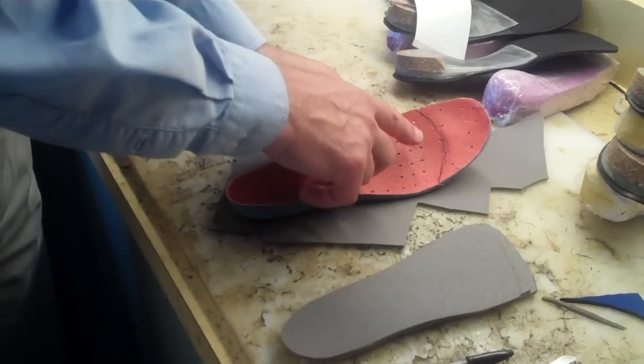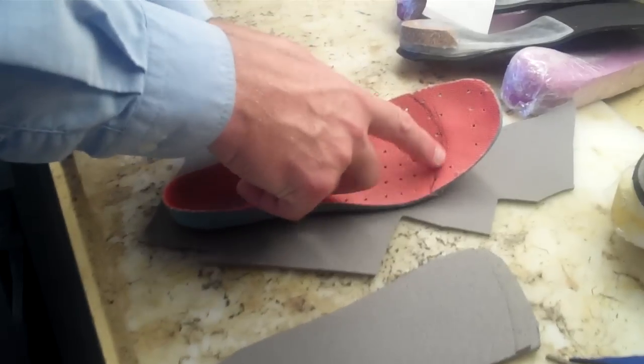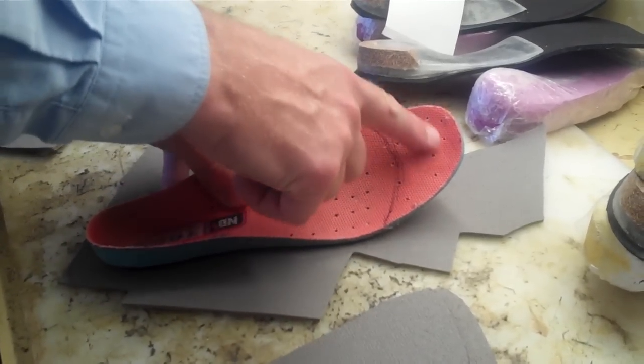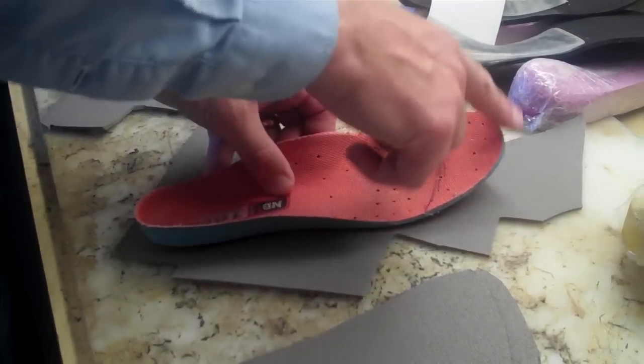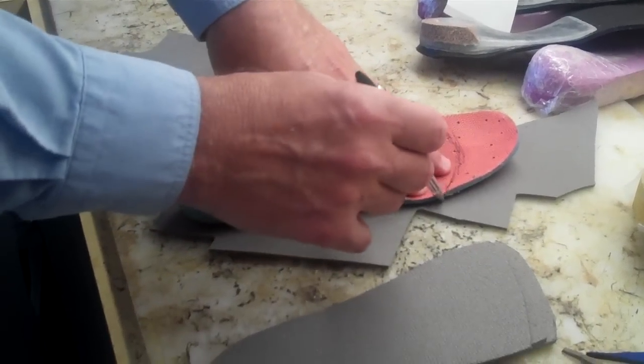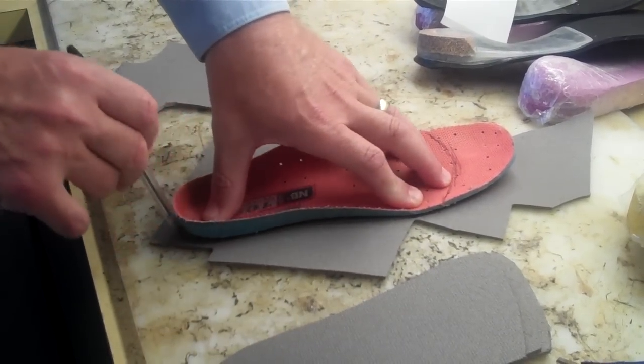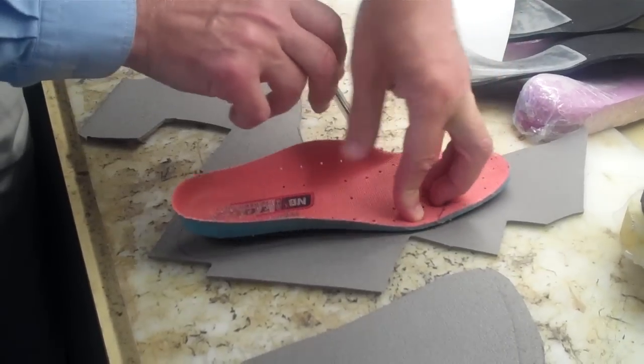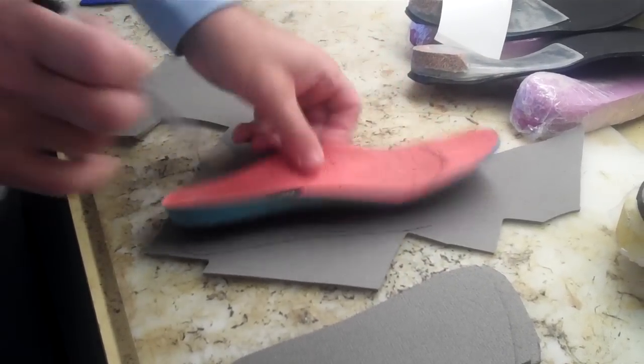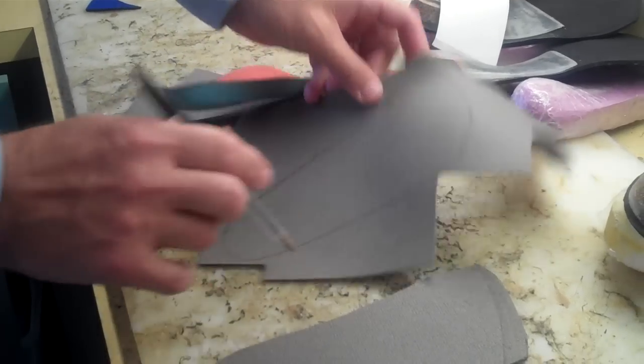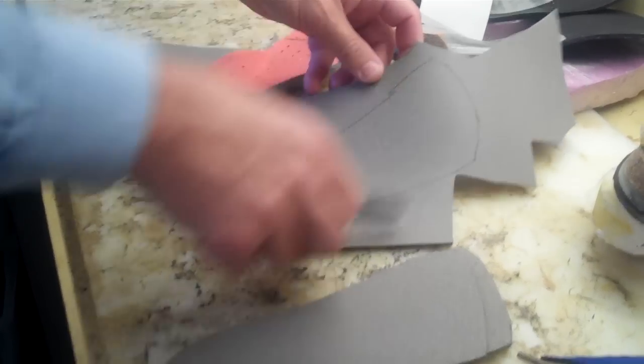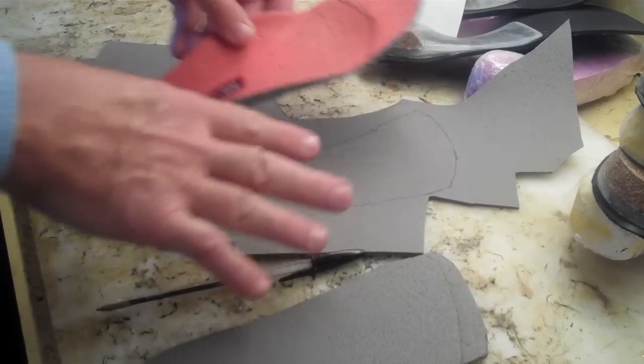So you first mark where the sulcus is so that the toes are going to be free with the lifts and not crowded at the end of the shoe. Then you mark when you make the lifts around the shoe insert, sort of connecting the dots up in the front, and then you cut these out to make your lifts.